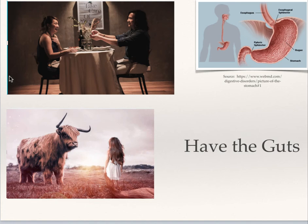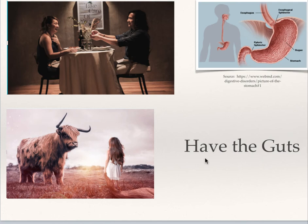The next idiom is 'have guts,' usually followed by 'to do something.' For example, the man in this picture finally got the guts to propose to his girlfriend after being nervous about it for six months. The verb 'have' changes to 'has' when the subject is singular — he has the guts, she has the guts — but with I, you, or plural subjects, we use 'have': I have the guts, they have the guts.